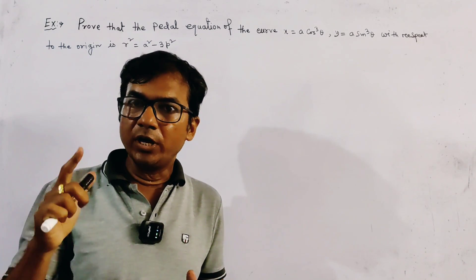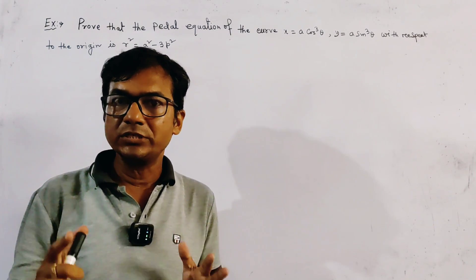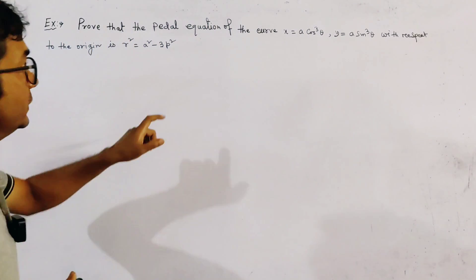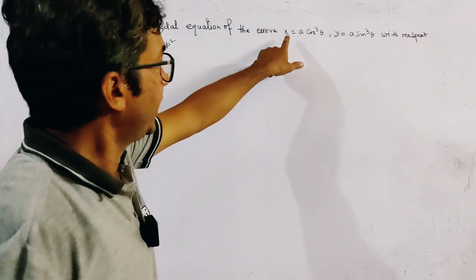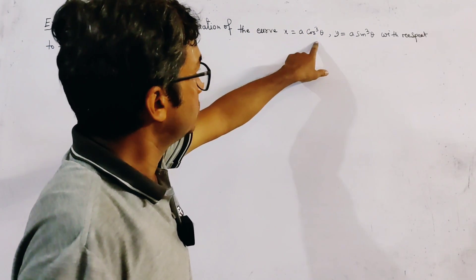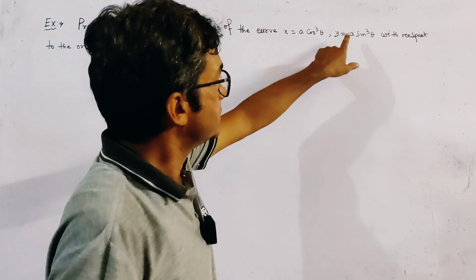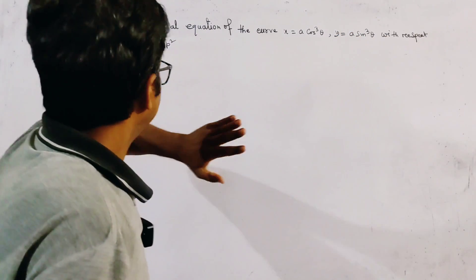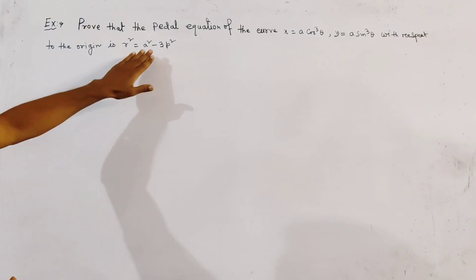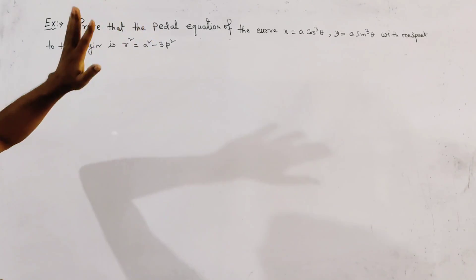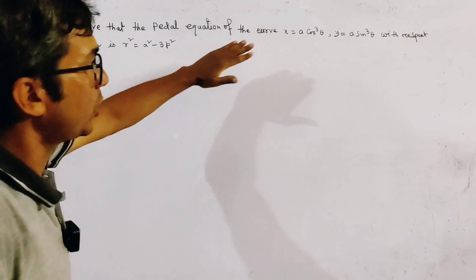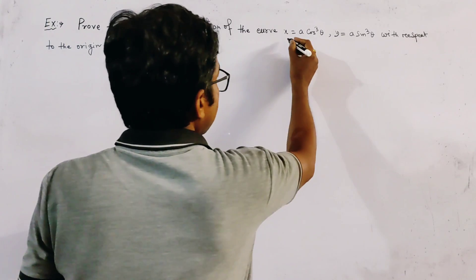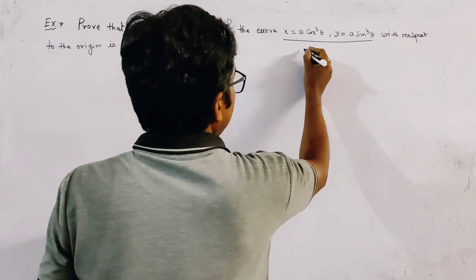In this lecture, we are going to discuss how to prove the equation of the curve x = a·cos³θ and y = a·sin³θ. We will show that the pedal equation of this curve with respect to the origin is given by a known relation. This curve is the parametric curve of the asteroid.